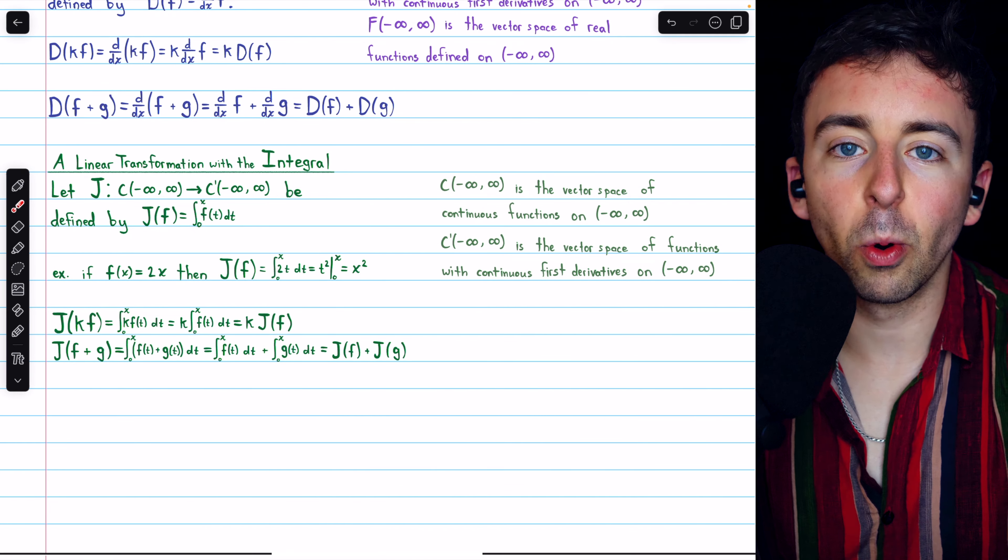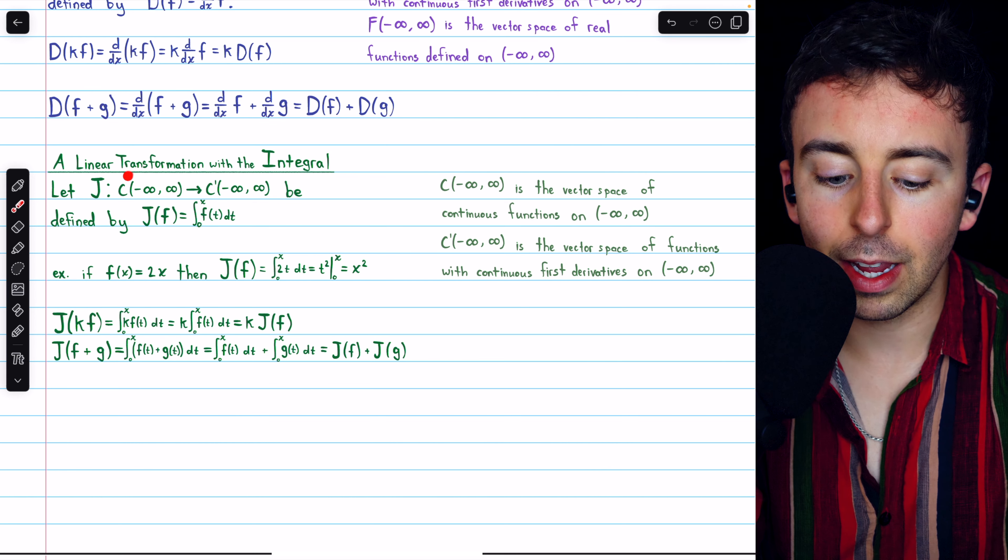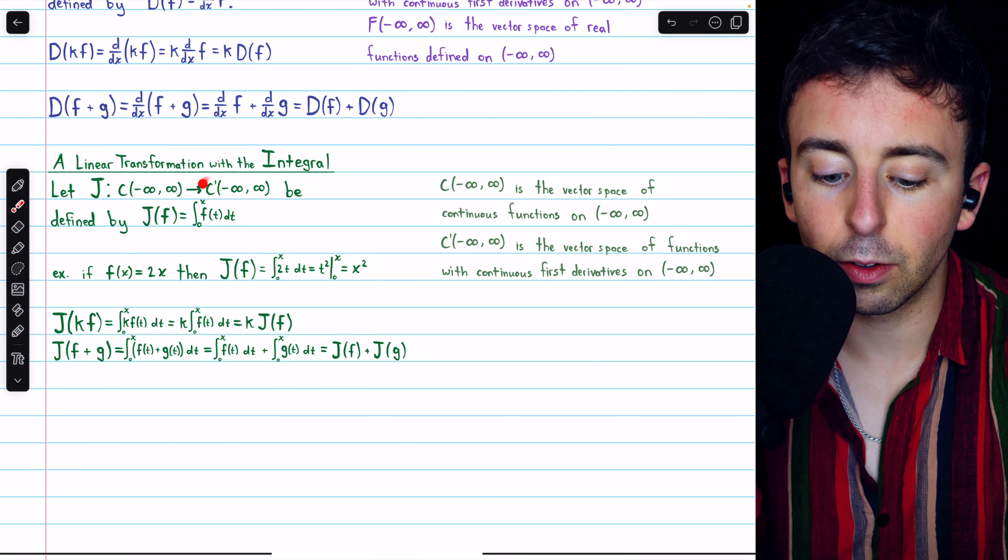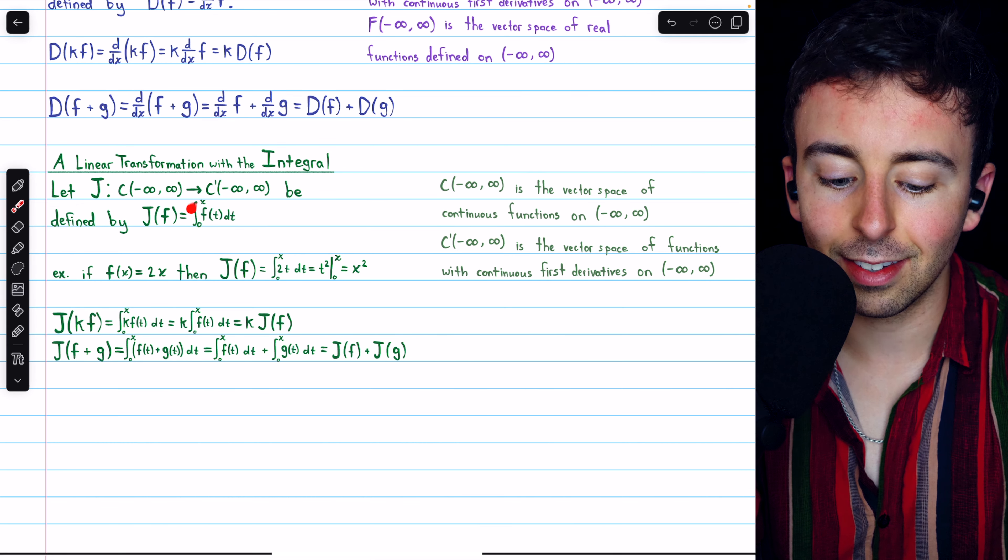Integration, although often a more complicated operation, is also a linear transformation. Here's an example. Let J be the mapping from the vector space of continuous functions to the vector space of functions with continuous first derivatives defined like this.